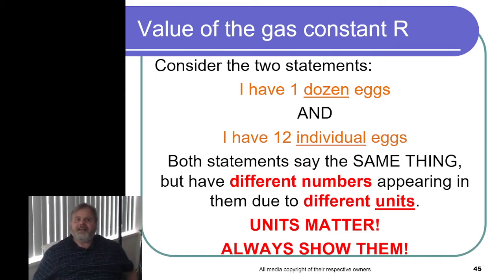That's because dozen has meaning and individual has meaning. It's the same thing with our pressure and volume units. This is another reminder why we should always be showing units in our calculations, because it's our first line of defense to understanding when we've made a mistake is dimensional analysis and units not working out.